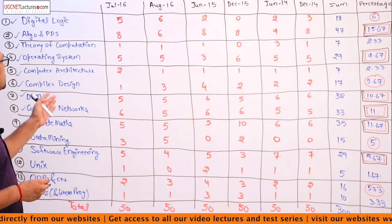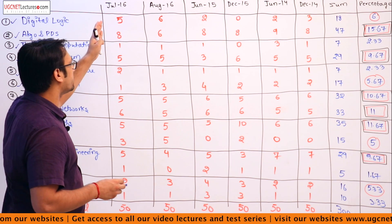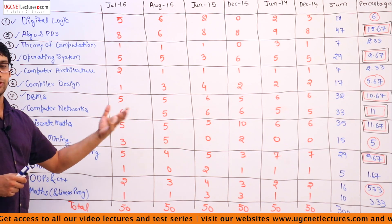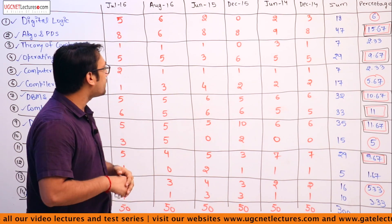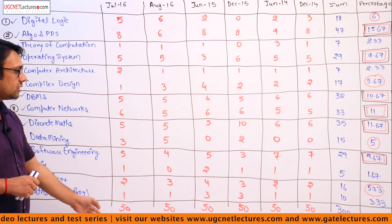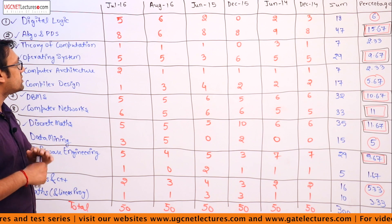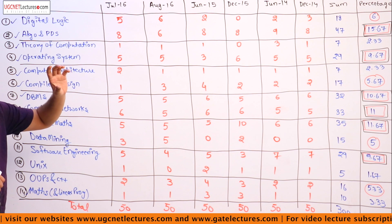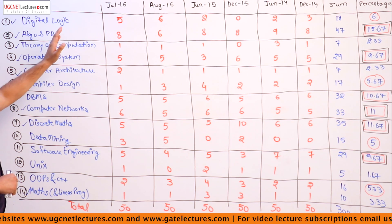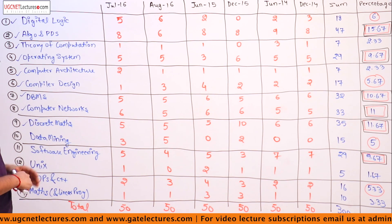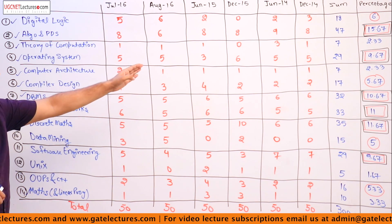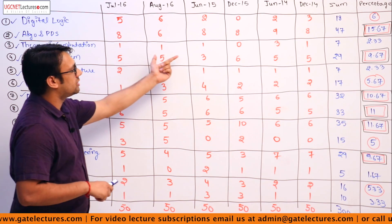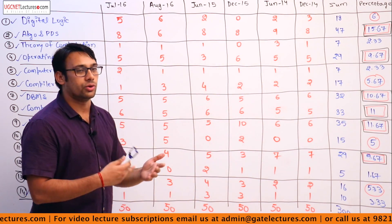Now we will see the analysis of each question paper. For July 2016, out of 50 questions in paper 2, 5 questions are from digital logic — approximately 10%. For algorithms and programming with data structures there are 8 questions. Theory of computation has very small weightage across all these examinations, so you can ignore theory of computation for paper 2.